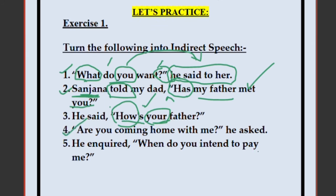Fourth: He asked, 'Are you coming home with me?' 'Are' is not a WH question, so: He asked if — 'you' can be written as I, he, or she. 'Are coming' is present continuous, changing to past continuous: was coming. 'Me' refers to the speaker himself, so 'him.' Answer: He asked if I was coming home with him.